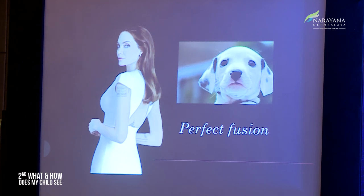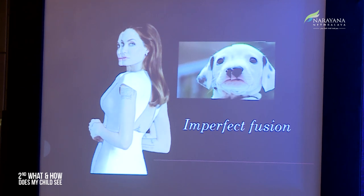There are millions of processes happening between the switches I am making in gaze distance. You see images on a day-to-day basis and are able to fuse. But what if you had imperfect fusion? You would not be able to fuse the two images formed on the two retinas, and you would see a somewhat distorted image.